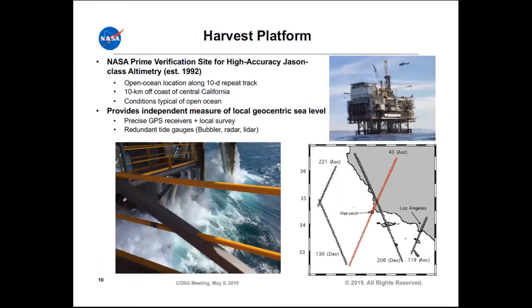The last test was at the Harvest platform off the coast of Southern California, right at the tip of Point Conception where the California coast goes from east-west to north-south trending. It's a great stress test location because there are very active seas — at the intersection where the Santa Barbara Channel enters the Pacific Ocean. It's close to shore but has high seas. It has served as an altimeter verification site since 1992, so we have multiple GPS receivers and tide gauges for verification with buoy results.